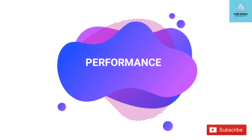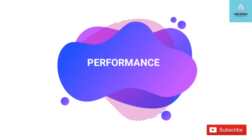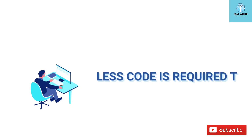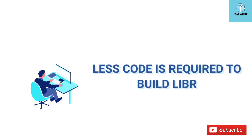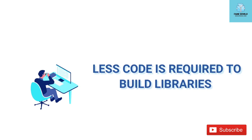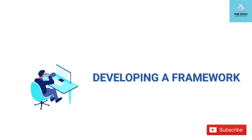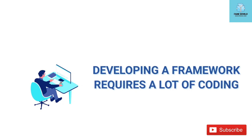Number 6: Performance. Less code is required to build libraries, which leads to faster loading time and better performance. Developing a framework requires a lot of coding, which increases loading time and decreases performance.